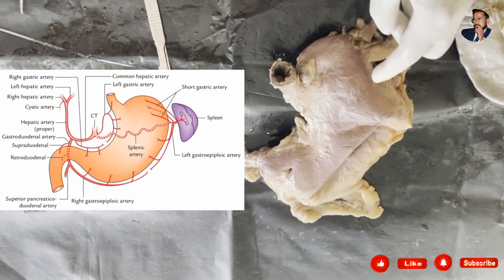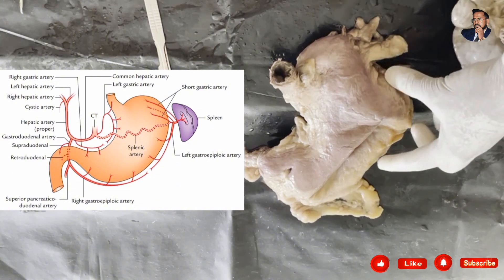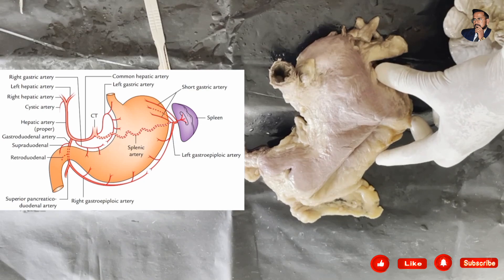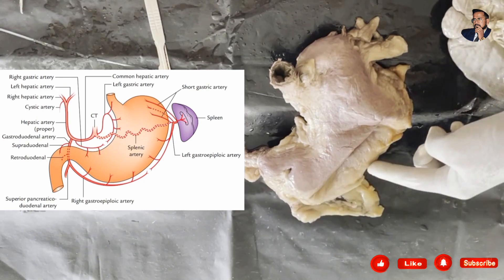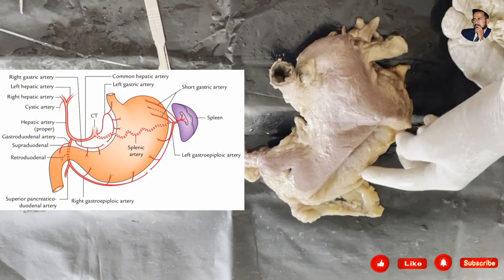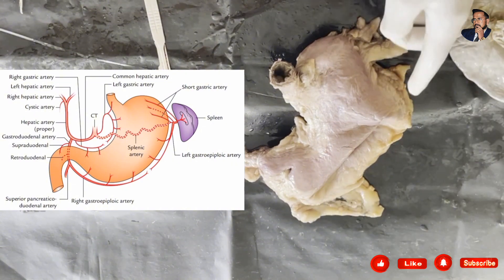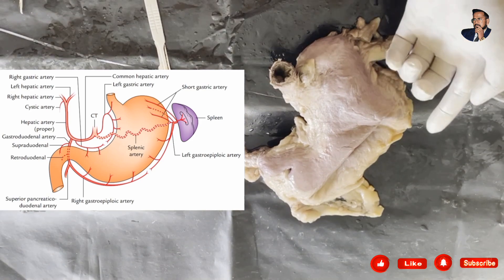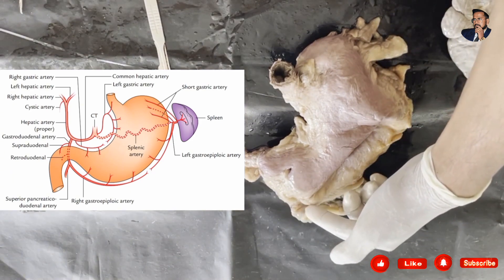Let's know the blood supply. The greater curvature is supplied by the short gastric artery and the left gastroepiploic artery, both branches of the splenic artery, which is a branch of the celiac artery. The lower part is supplied by the right gastroepiploic artery, which is a branch of the gastroduodenal artery. So to summarize: the short gastric, left gastroepiploic, and right gastroepiploic arteries supply the greater curvature.